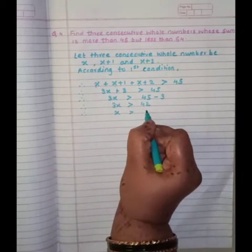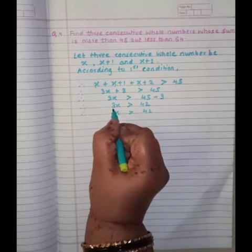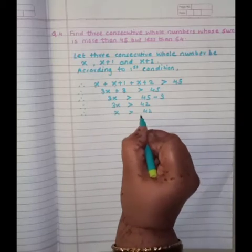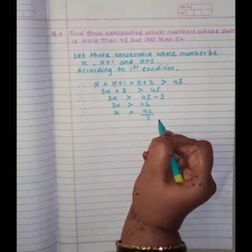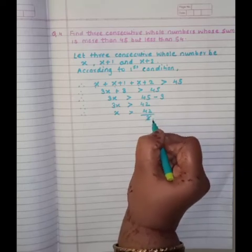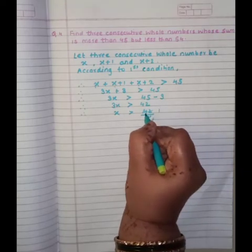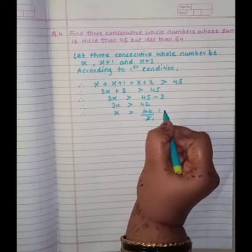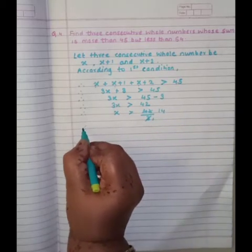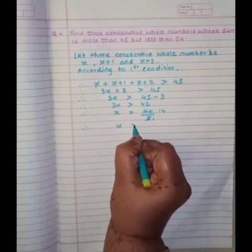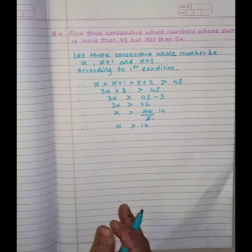Therefore, X is more than 42. This 3 is here in multiplication. When it shifted opposite side, it will be in division. So 3 ones are 1 left. 1 and 2, 12. 3, 4s are 12. So therefore, X is more than 14.